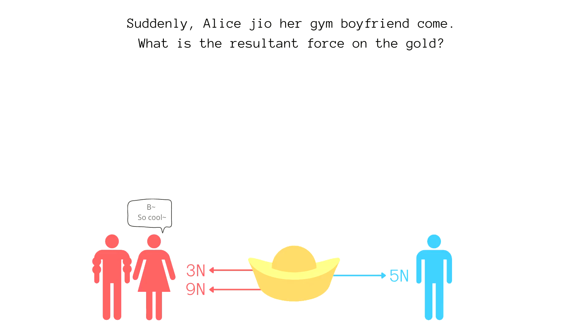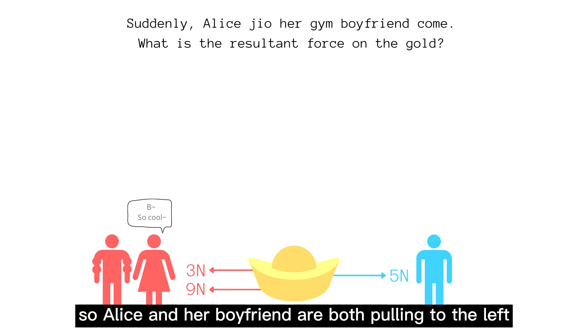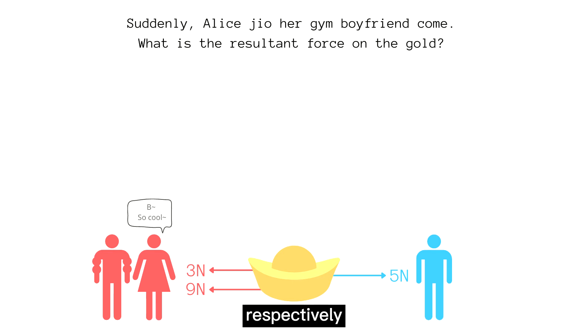Suddenly, Alice joined her gym boyfriend to come and help her. What is the resultant force on the gold now? So Alice and her boyfriend are both pulling to the left with 3 Newtons and 9 Newtons respectively.